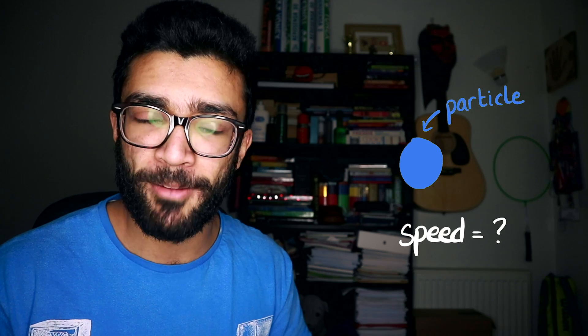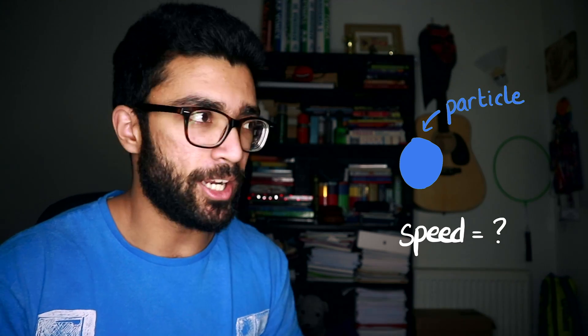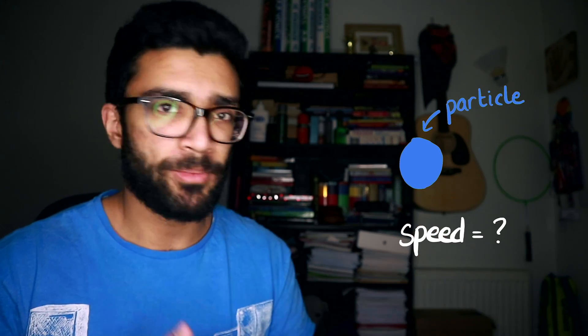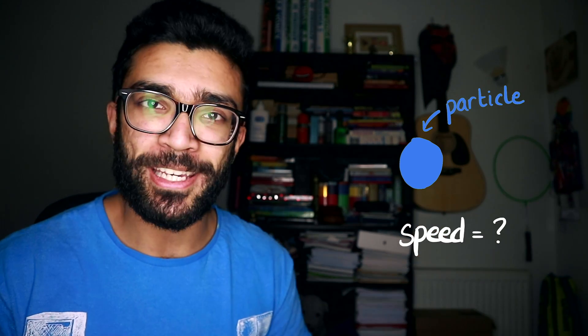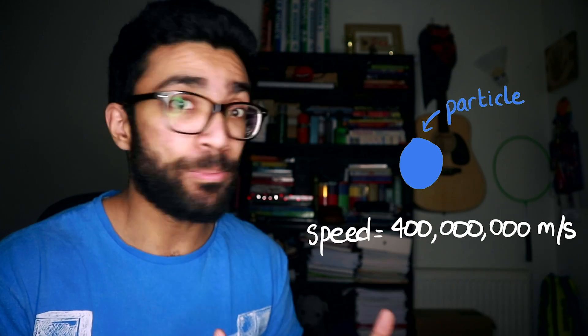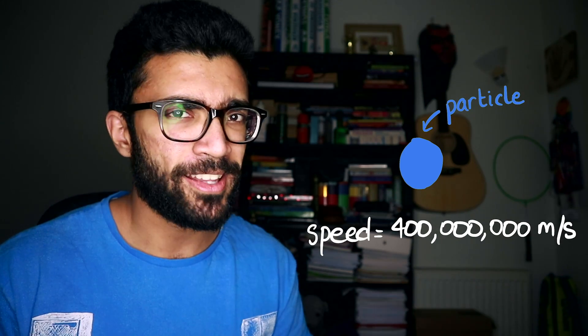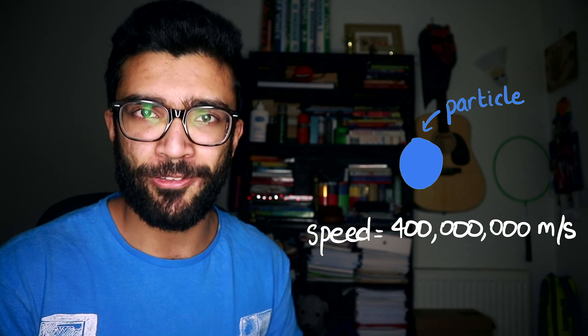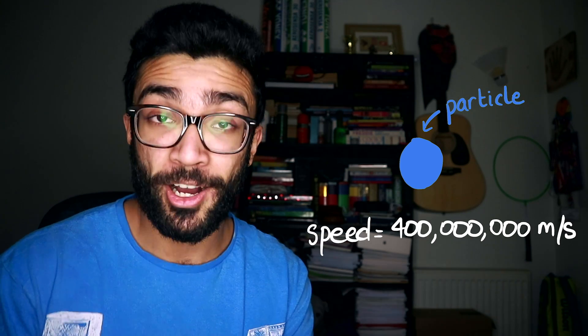The best way to explain it is with an example. Let's say we're considering the speed of a particle. We work through all the algebra and we find the speed to be 400 million metres per second. Now, you're probably thinking that's a ridiculously fast speed — but just the fact that it's fast shouldn't be what bothers you, because we're studying a particle, which is likely to travel at really high speeds.